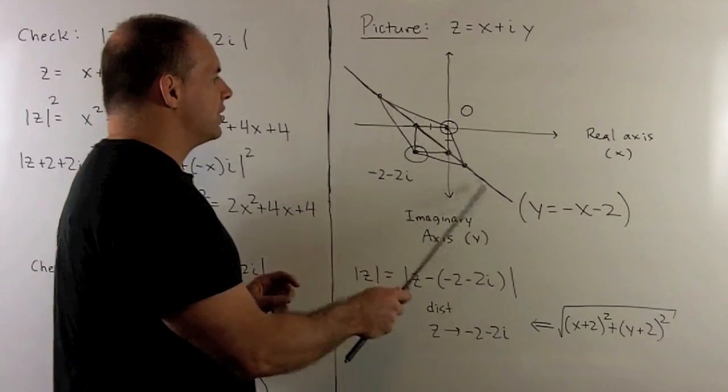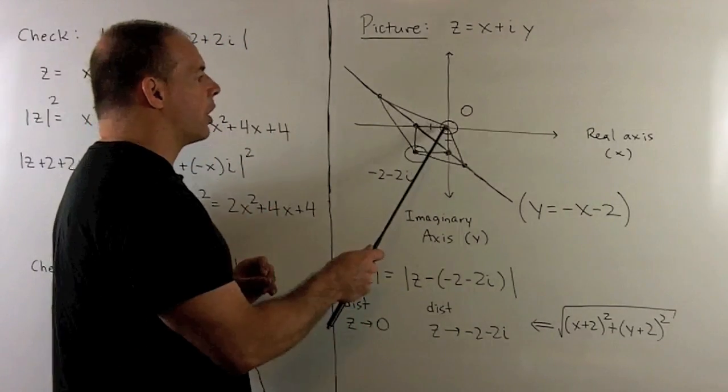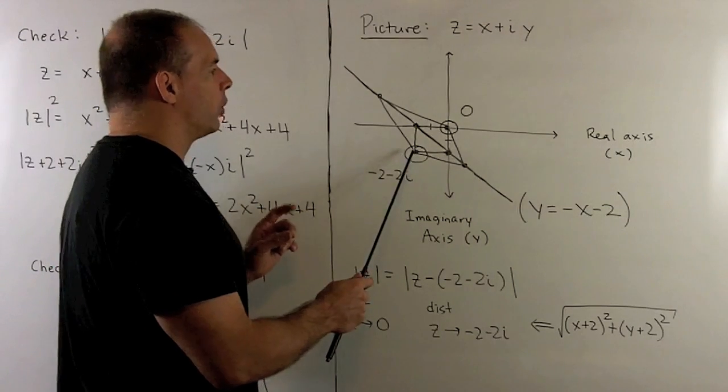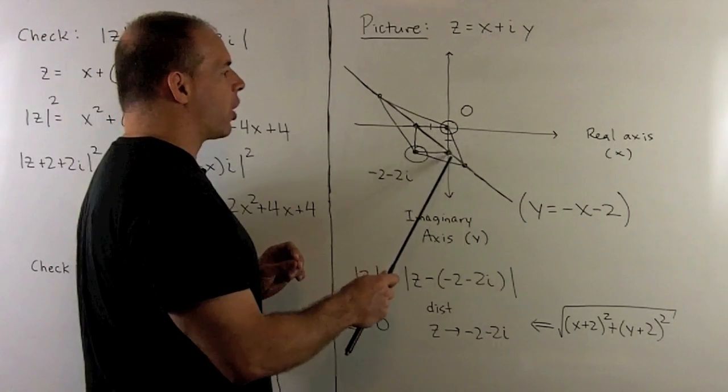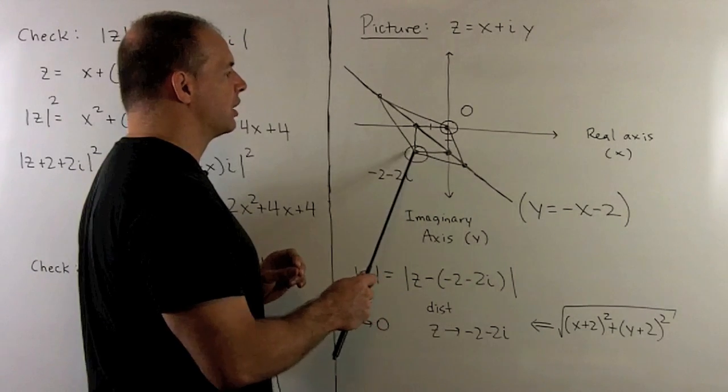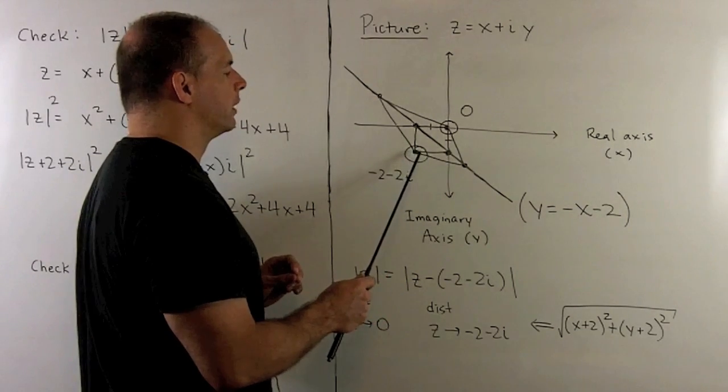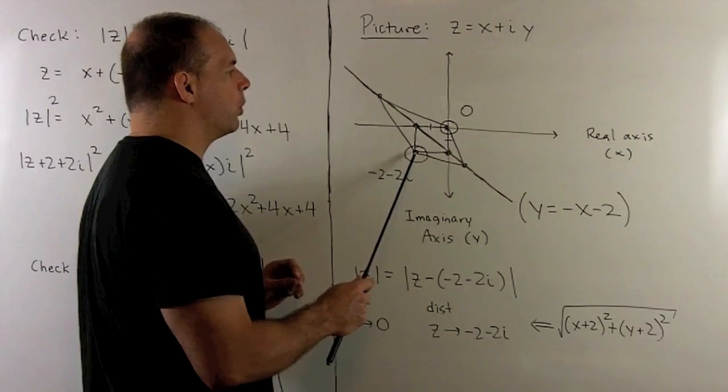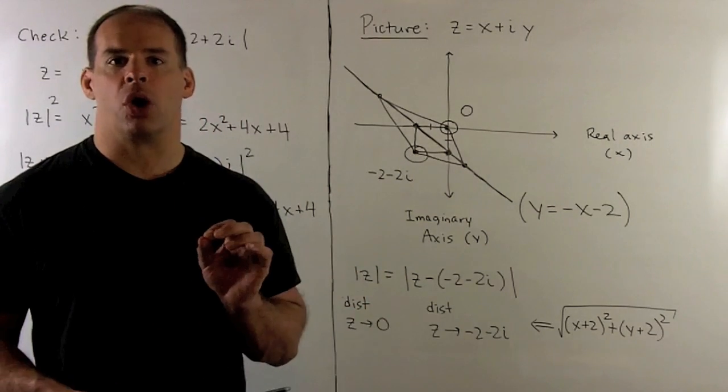So what our line is, we take the point at 0, point at -2 - 2i. Then we consider all points that are at the same distance from each of these points. So if I take any point on this line, measure its distance to this point, measure its distance to this point, those two distances are always equal.